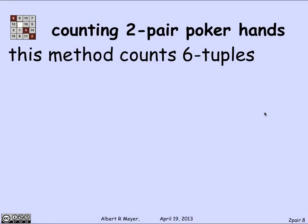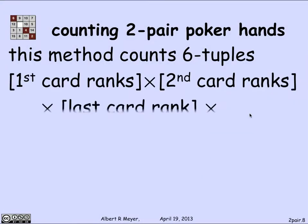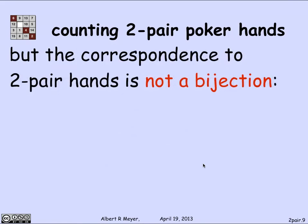The problem is that what I've described — that number — is exactly the set of six-tuples consisting of the first pair rank, the second pair rank, the last card rank, the first pair suits, the second pair suits, and the last card suit. The formula correctly counts the number of such six-tuples. The difficulty is that counting these six-tuples is not the same as counting the number of two-pair hands, because this mapping from six-tuples to two-pair hands is not a bijection.